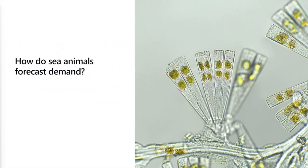That brings us back to our riddle of the day. The question was: how do you see animals forecast demand? They use algae rhythms! Hopefully that was an interesting brain teaser — I enjoy these jokes, they make it fun for me. With that, we are going to take it over to the Q&A portion of this tech talk.